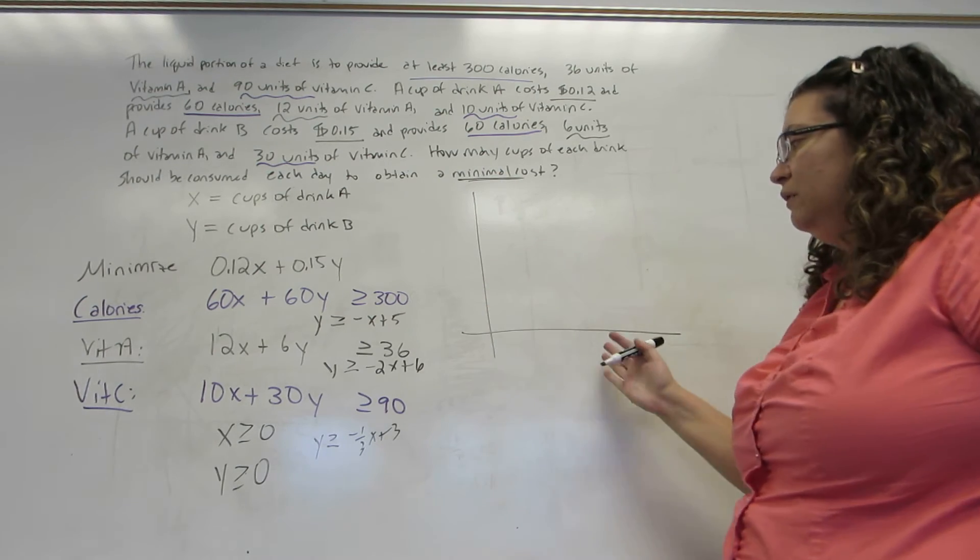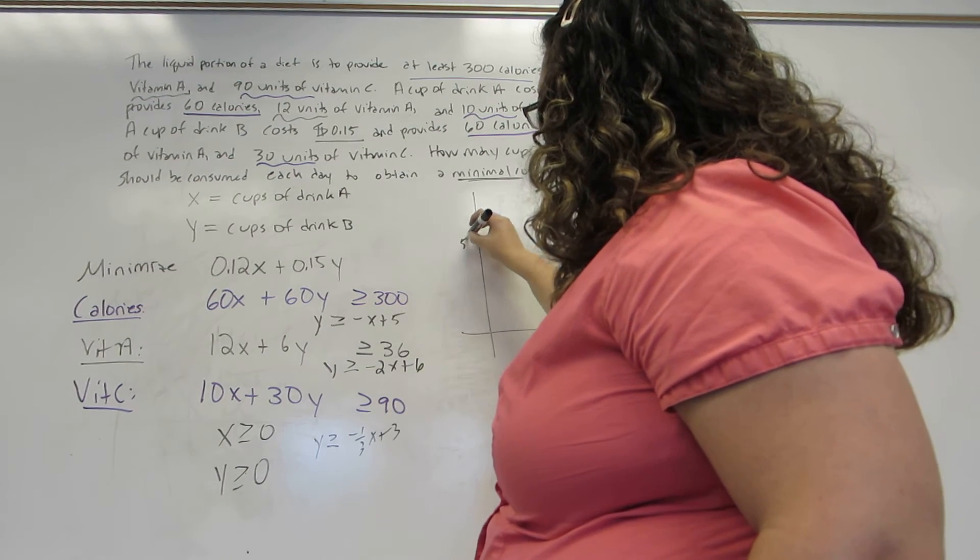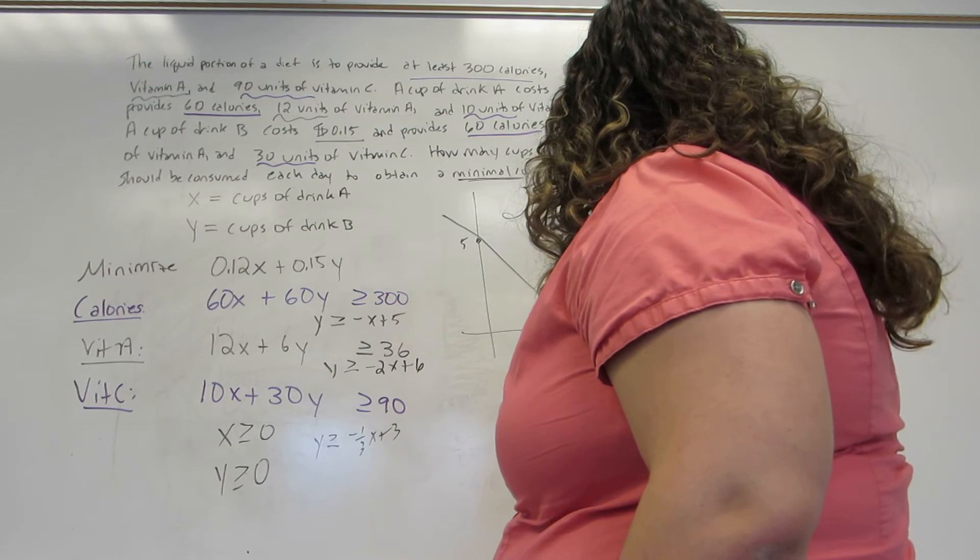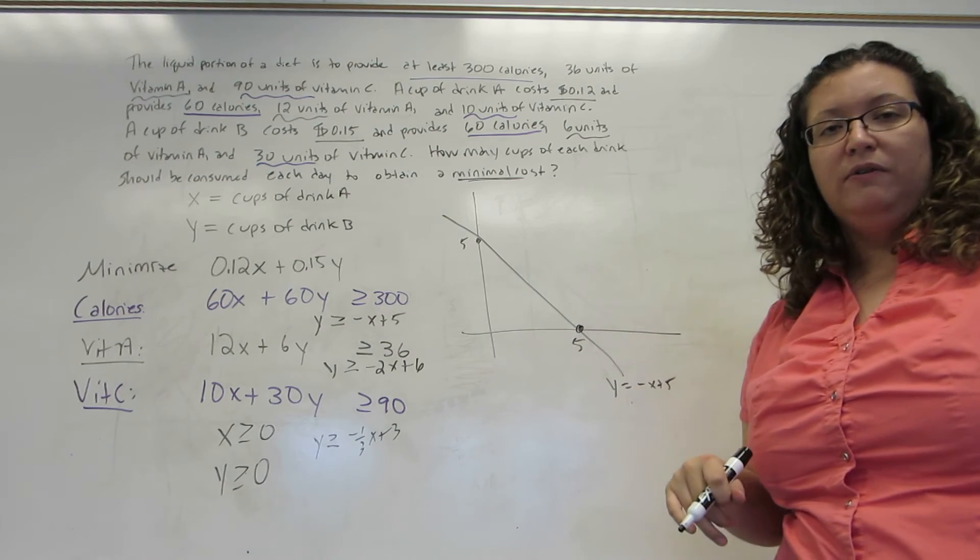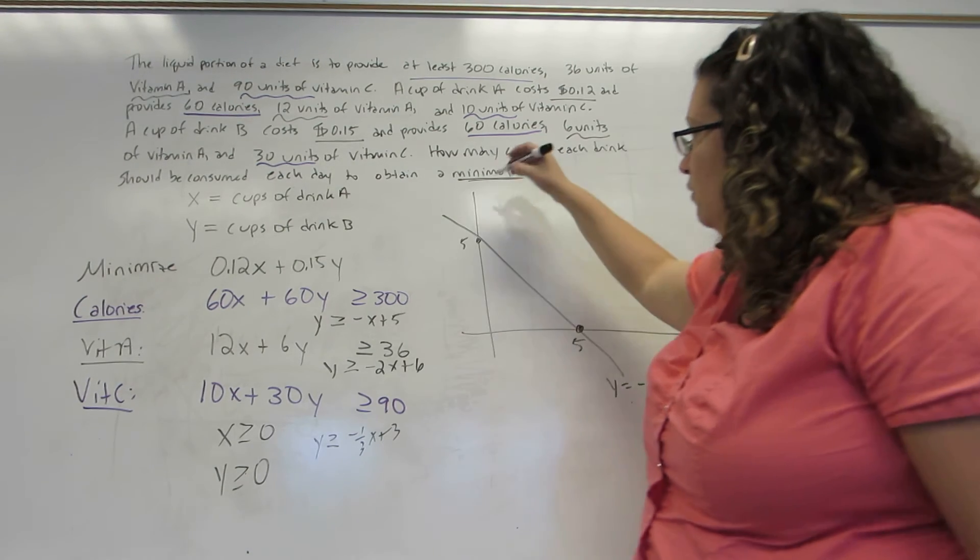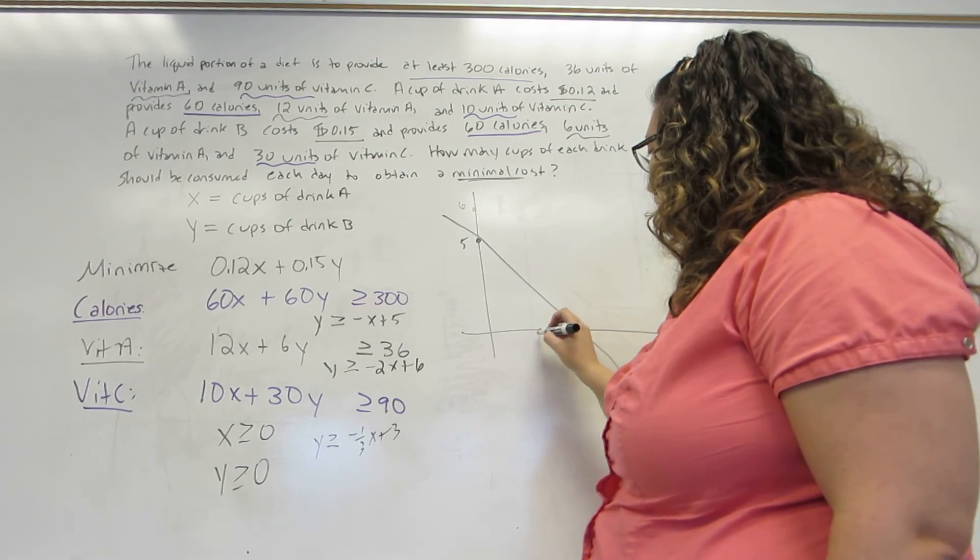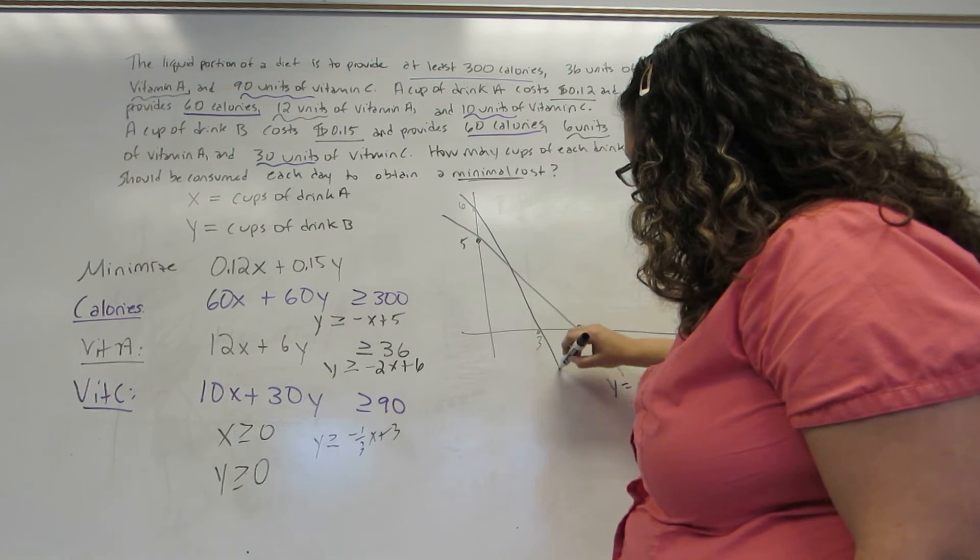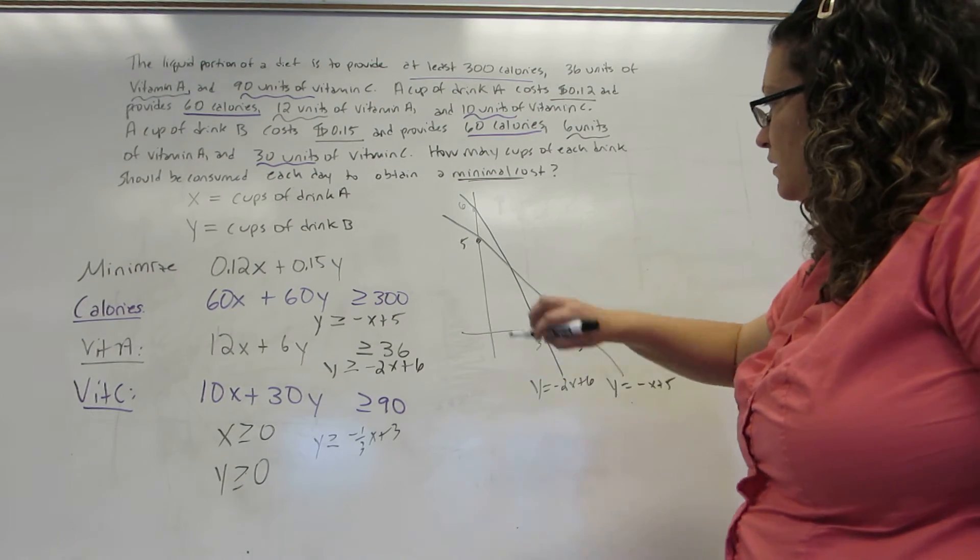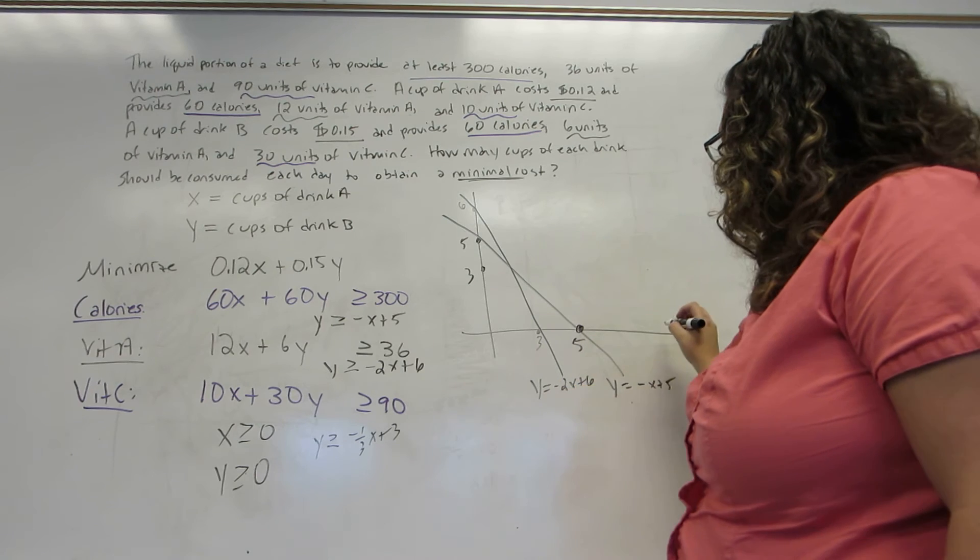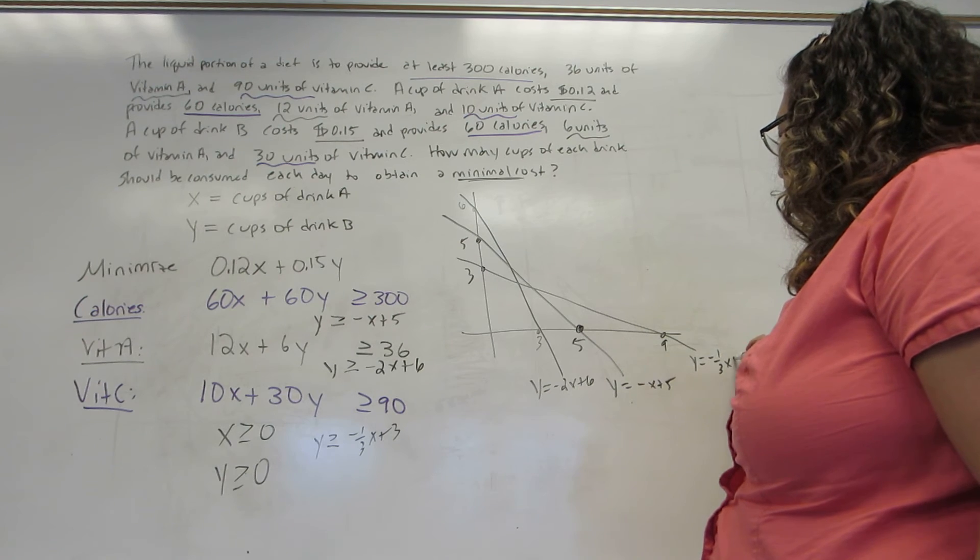Moving to the graph, once again we only care about first quadrant. Our first one has a Y-intercept of 5 and slopes downward. This is Y equals minus X plus 5. You can also compute that the X-intercept is 5. This gives us a Y-intercept of 6 and X-intercept of 3. So here's our line Y equals minus 2X plus 6. This gives us a Y-intercept of 3 and an X-intercept of 9. So here's Y equals minus one-third X plus 3.